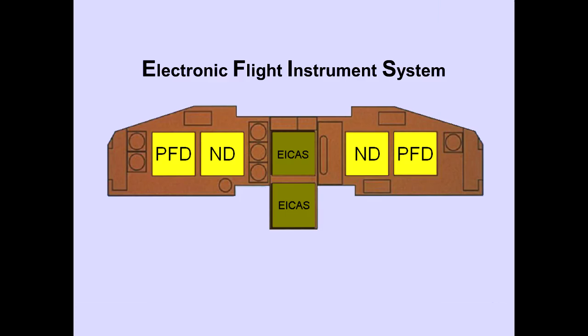The electronic flight instrument system, or EFIS, is comprised of the primary flight display, PFD, and the navigation display, ND.